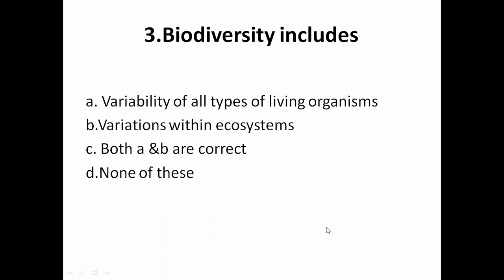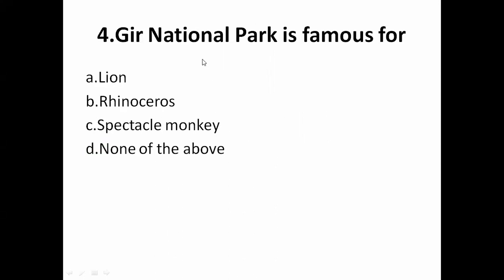Biodiversity includes: A is variability of all types of living organisms, B is variation within ecosystem, C is both A and B are correct, and D is none of these. Biodiversity means the variability of all types of living organisms and the variation within ecosystems. So C is the correct answer — both A and B are correct.